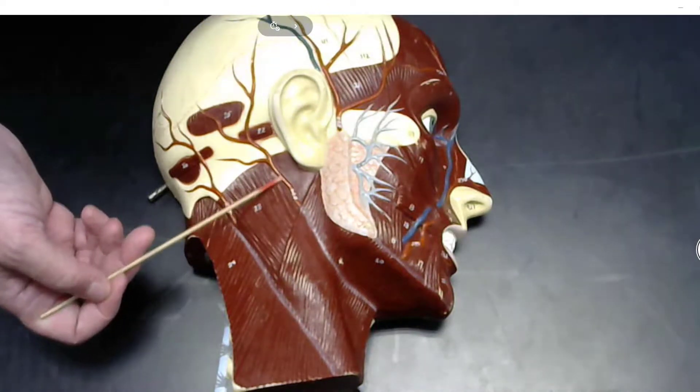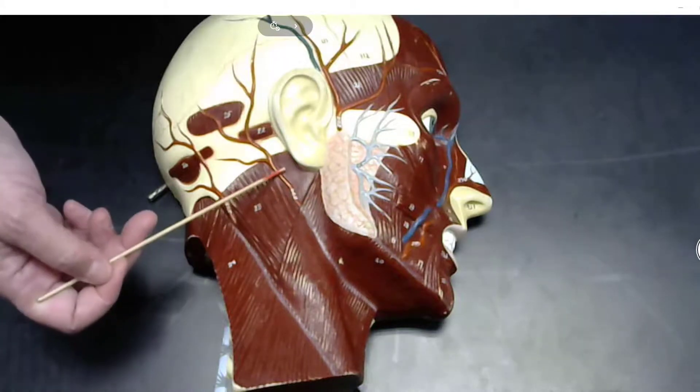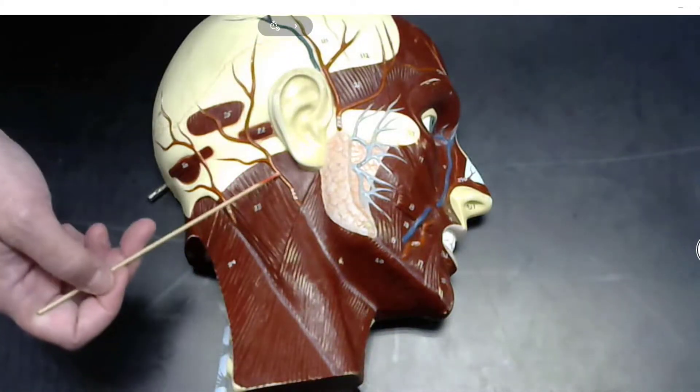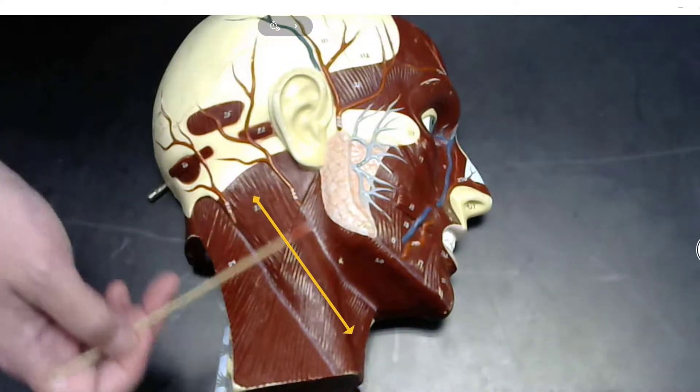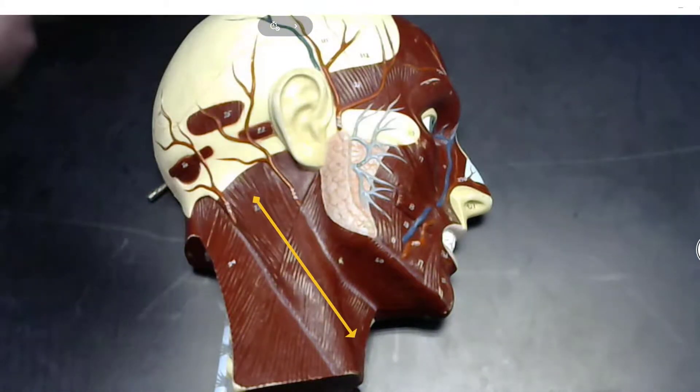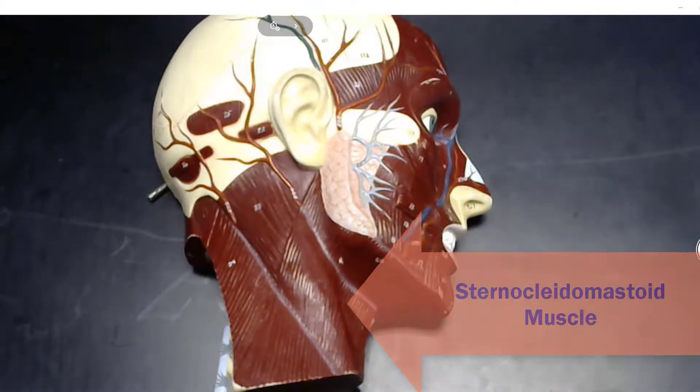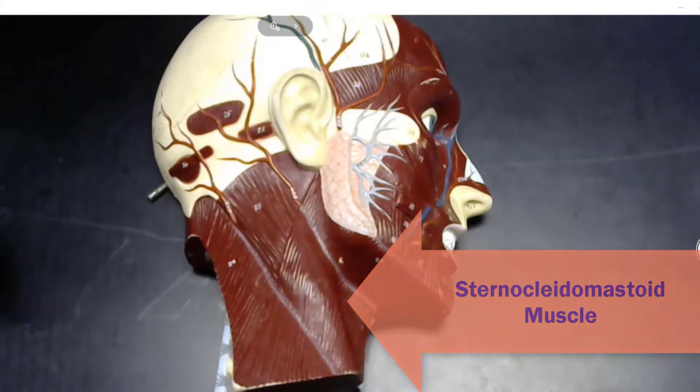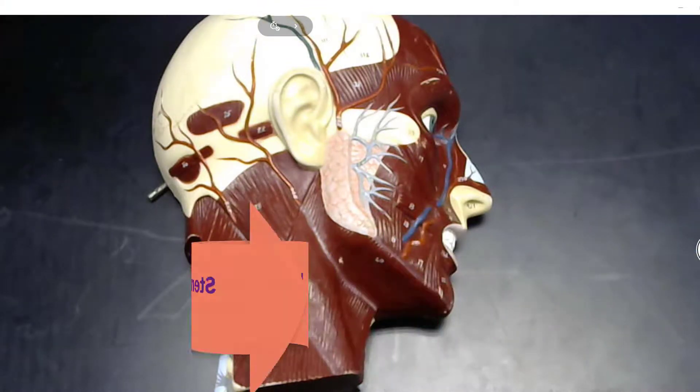Going down from here, you have a muscle called the SCM muscle, or the sternocleidomastoid muscle, which allows you to flex the neck.